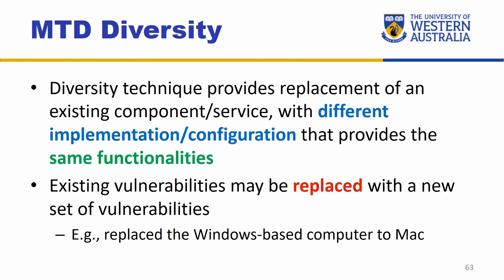Diversity technique has been used for a while and can be implemented in various layers of the system. What it tries to achieve is to replace an existing component with a different implementation or configuration, such that you still provide the same functionalities but the way it's processed is different. Existing vulnerabilities may be replaced with a new set of vulnerabilities, because now we are using different logic, components, or code to do the same thing. For example, you replace a Windows-based computer with a Mac — you can still browse the internet, open text editors, watch videos, and write code, but the operating systems provide those services differently.